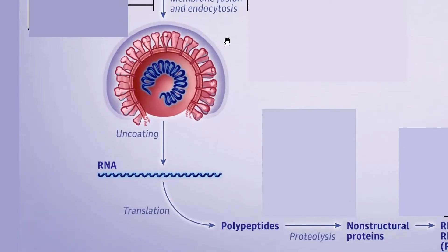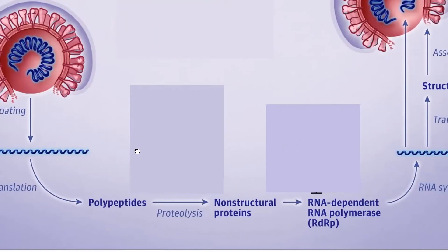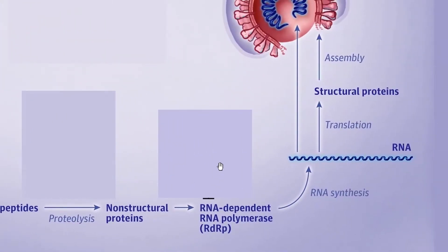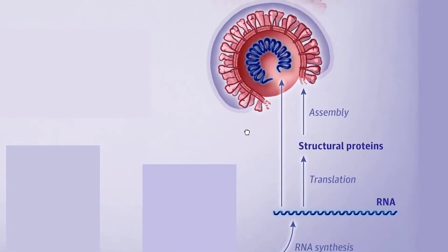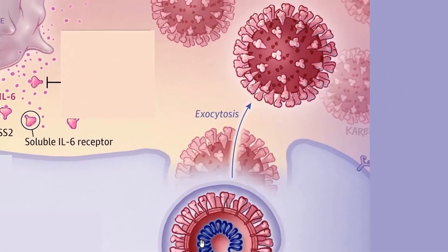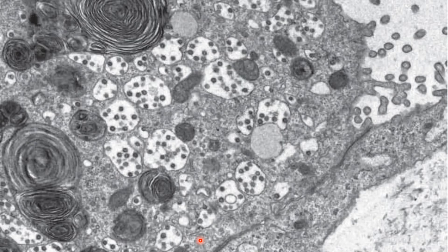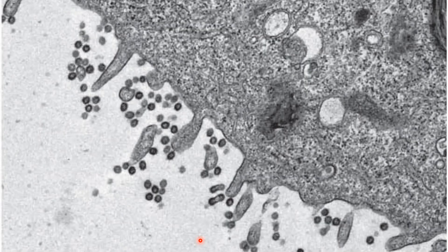From here, the virus goes through uncoating. Once uncoating happens, translation occurs and it leads to polypeptide production. Proteolysis happens and with the help of RNA-dependent RNA polymerase, it leads to RNA synthesis, then translation, assembly, and finally the virus undergoes exocytosis. This is a human electron microscope image of a type 2 cell with SARS-CoV showing viral particles in double membrane vesicles, and another image showing the virus along the apical microvilli through exocytosis.